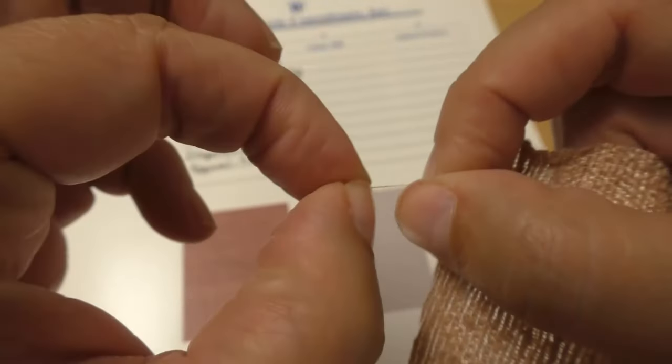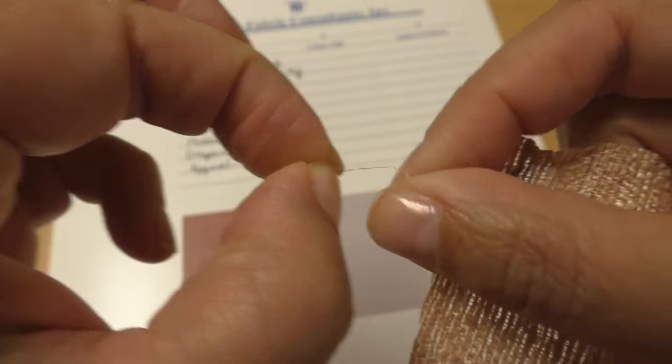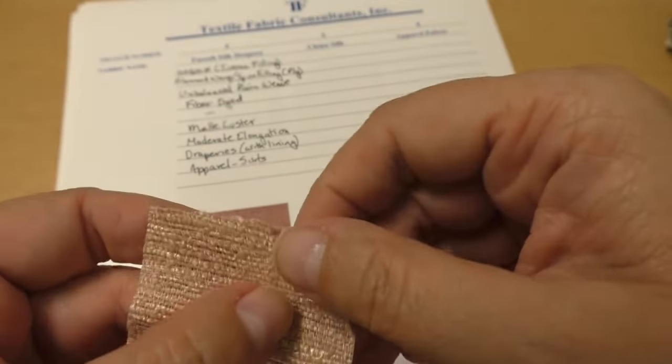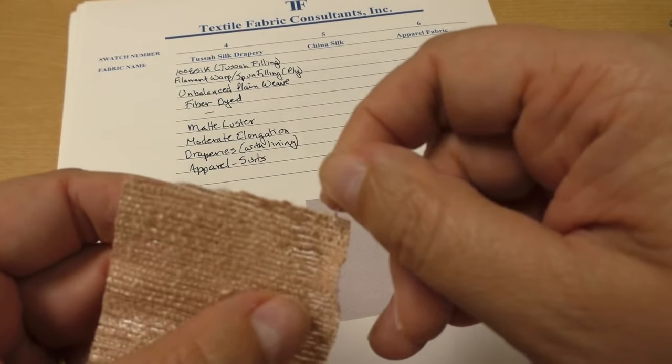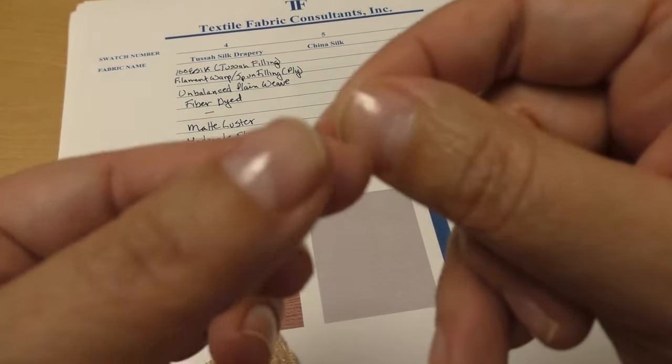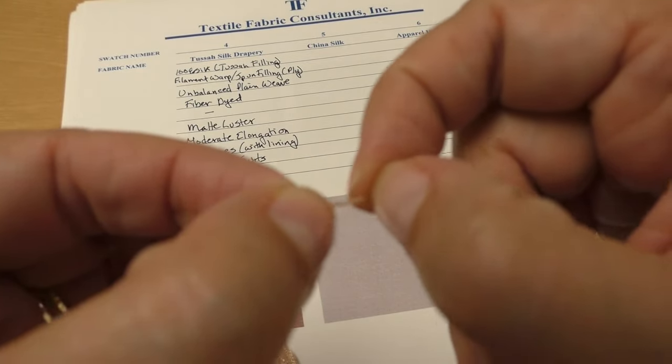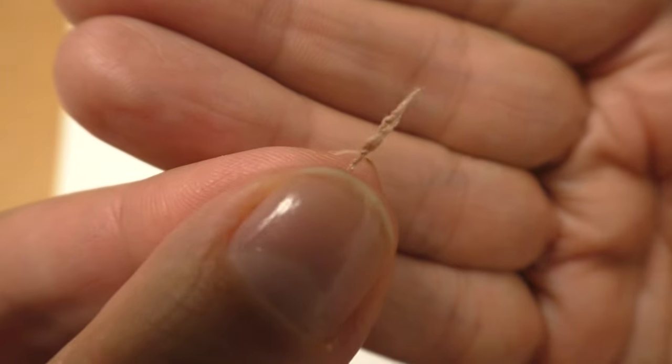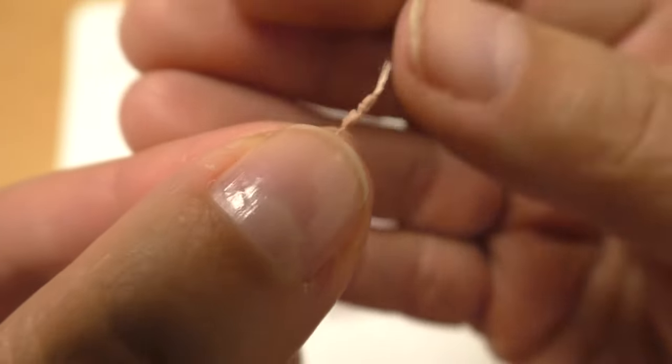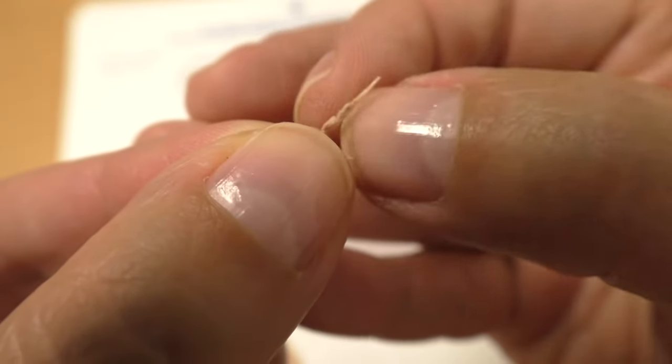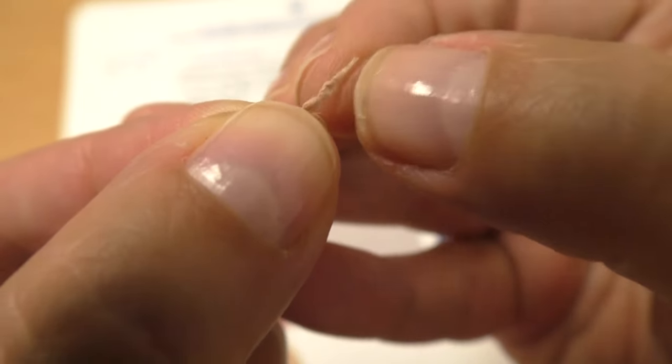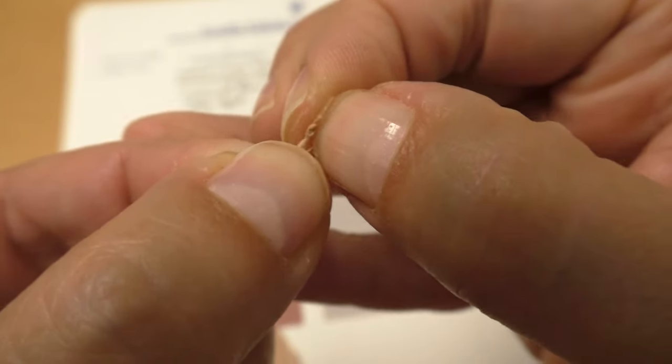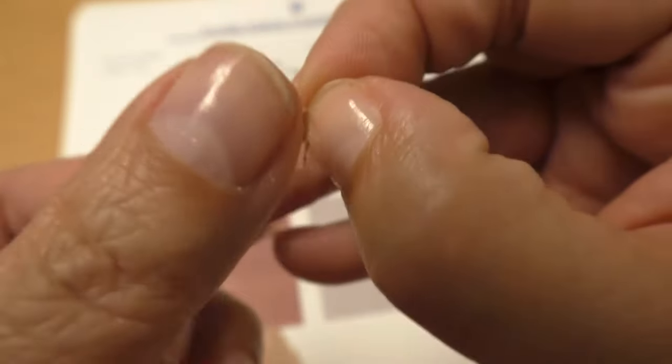No rough fiber ends and when I try to pull it apart with my fingers, I really can't do it. Now on the other hand, the filling yarns in this swatch are thicker and fatter and I'm easily able to pull fibers off of them. You see the little fiber ends sticking out there, so although it still has a little bit of shine, we can pull it apart and that tells us that this is a spun yarn.